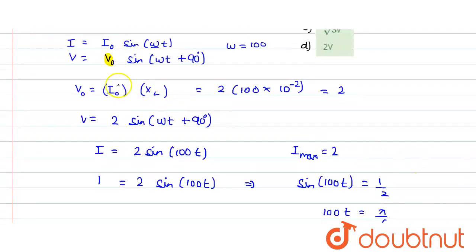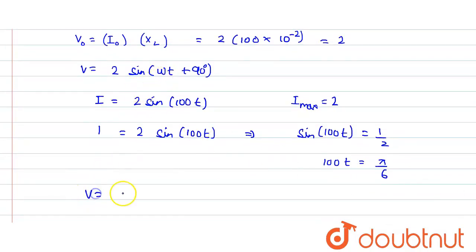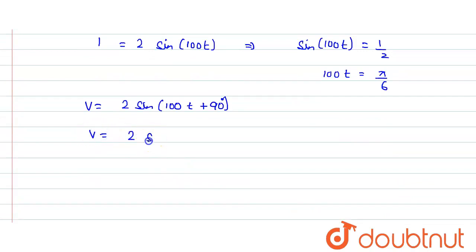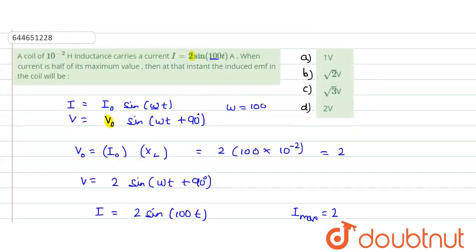This is the value of 100 t. Now we can calculate our V value. V is given as 2 sin 100 t plus 90 degrees. We can put our value of 100 t as pi by 6. So it would be V equals to 2 sin pi by 6 plus 90. Sin 90 plus theta is equals to cos theta with a positive sign. Theta is pi by 6. What is the value of cos pi by 6 or cos 30? It is root 3 divided by 2. This and this would be cancelled. Then our value of voltage would turn out to be root 3 volts. Which option would be the correct option? The correct option would be the C option. Hope you understood the solution. Thank you.